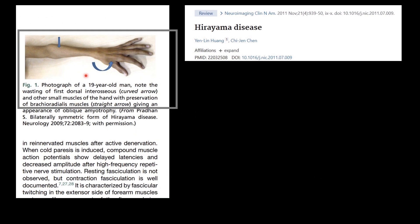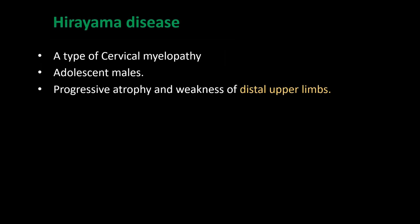Here they have given an example — you can see muscle wasting in the upper limb, especially the distal upper limb, and there is some sparing of the brachioradialis muscle. Hirayama disease is a type of cervical myelopathy that mostly occurs in adolescent males with progressive atrophy and weakness of the distal upper limbs.